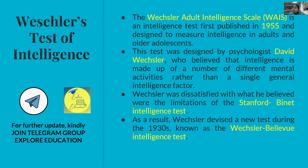Weschler was dissatisfied with what he believed were the limitations of the Stanford-Binet intelligence test. He was not satisfied with the various revisions of Stanford-Binet. As a result, Weschler devised a new test during the 1930s, exactly in 1939, known as the Weschler-Bellevue Intelligence Test, also called WBIS — the Weschler-Bellevue Intelligence Scale.